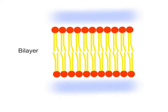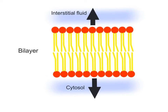When phospholipids form cell membranes, they line up in two layers called a bilayer. Their nonpolar tails face each other on the inside of the membrane, and their polar heads face the two polar fluid environments: the interstitial fluid outside of the cell and the inner cytosol. We'll learn more about cell membrane structure in the next unit.